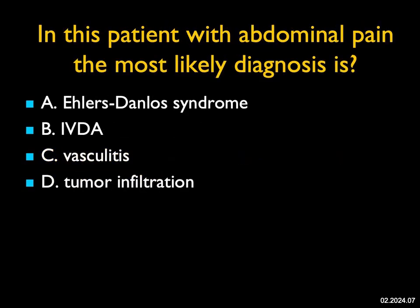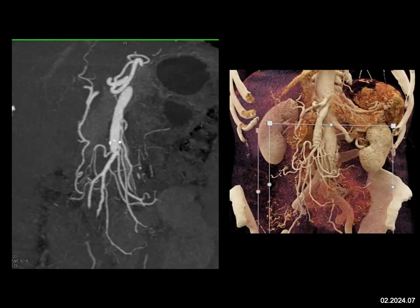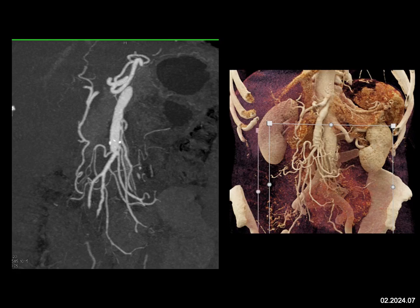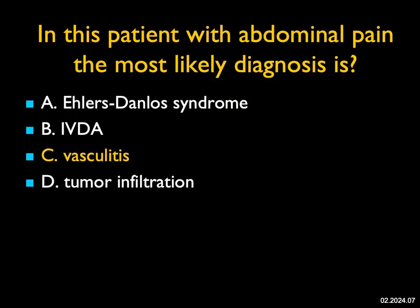In this patient with abdominal pain, what do we see on the MIP and the cinematic rendering? We follow the patient's SMA downward and it's irregular. Then you see all of these unusual branch vessels with slight beading in some of them off the patient's SMA. Ehlers-Danlos can give you aneurysms but not this beading. IV drug abuse can give a vasculitis appearance. I don't see a tumor here. The most likely diagnosis is vasculitis — a large vessel disease. This ended up being worked up further and was giant cell arteritis.